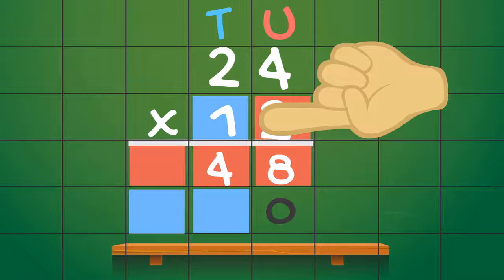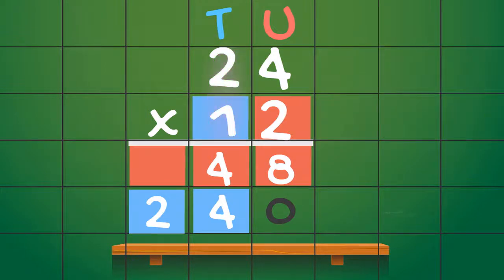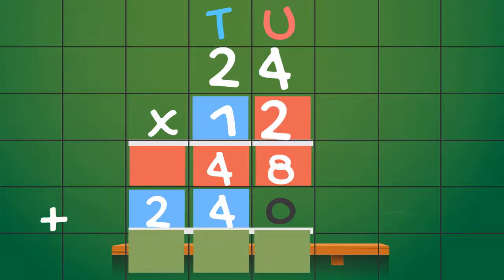So first we do the units. 1 multiplied by 4 is equal to 4. This goes in the next blue box. We have nothing to carry so it's straight into multiplying the tens. 1 multiplied by 2 is equal to 2. This goes in the next blue box. There is nothing else to multiply so our blue sum is finished. Brilliant. So our two multiplication sums are finished. Red sum and blue sum done. All we need to do now is add our two answers together.